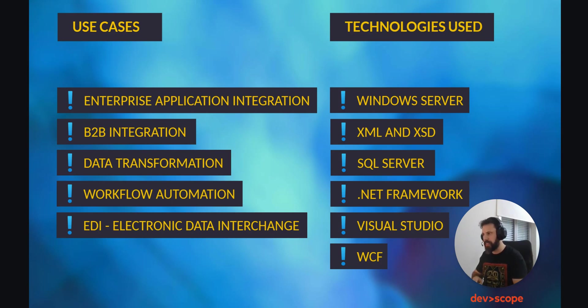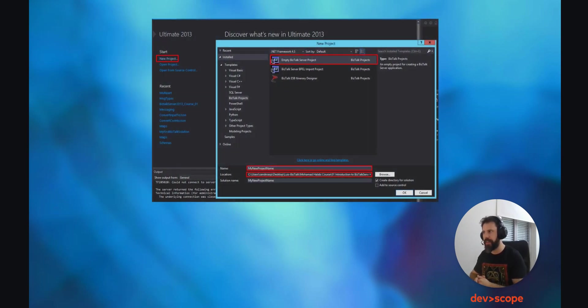In essence, BizTalk acts as a bridge between different systems, applications and services, enabling them to work together seamlessly by handling data transformation, routing and process automation. Let's dive into action and create our first project. Open BizTalk and create an empty project, giving it a name that makes sense to you, a location, and then click OK.